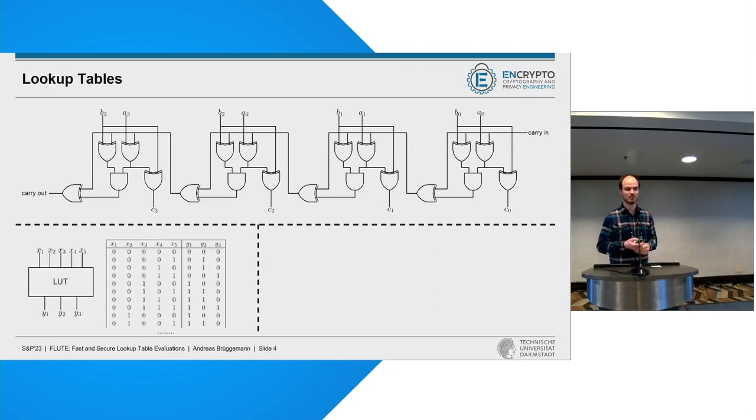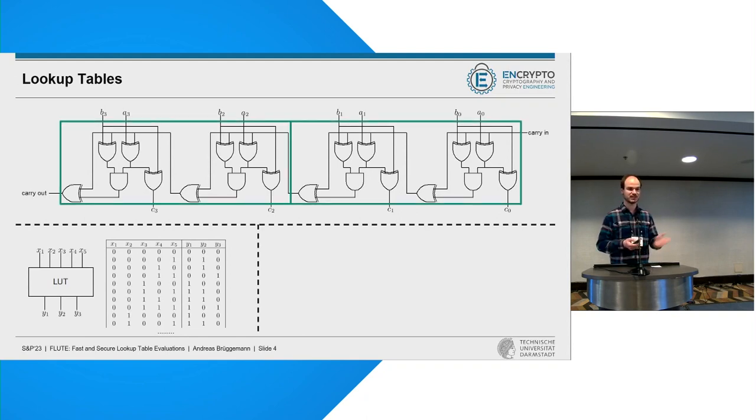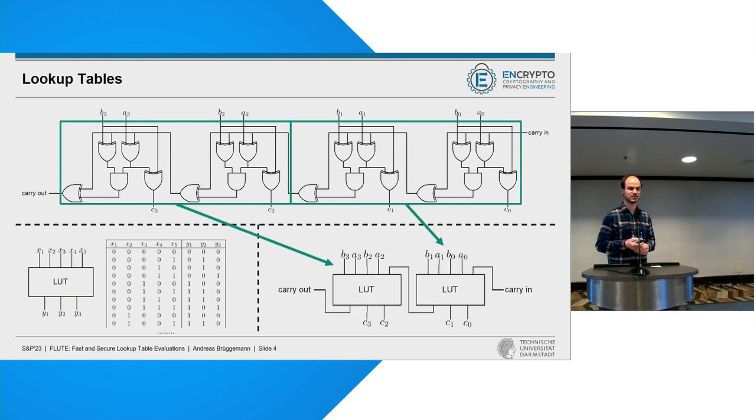If we have access to some lookup tables, those are some gates which take more than two inputs and also may have more than a single output and encode some arbitrary function. Then we can just identify some chunks of the circuit and replace them by those lookup tables, so we have a much more compact circuit where only the signal has to travel along two of those lookup table gates.